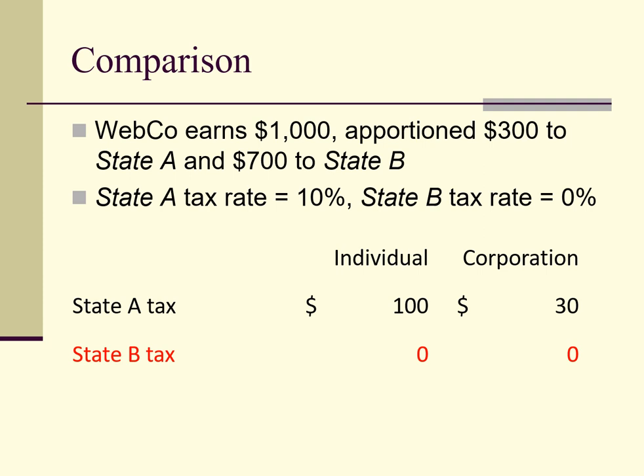In either case, state B will not impose a tax. It is worth noting that if Webco is a C corporation, it can apportion income to state B and avoid state A tax on that income, even though state B does not impose an income tax. As long as state B has the right to tax the income, if it so chooses, state A will not tax the income apportioned to state B.